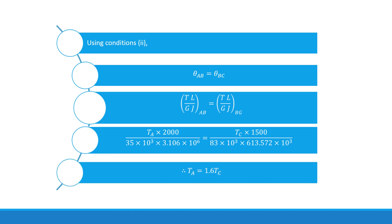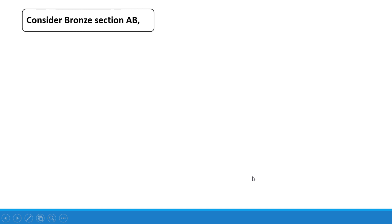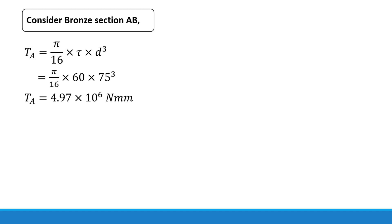Solving this gives the relation: Ta = 1.6 × Tc. Now considering the bronze section AB as a solid shaft, torque Ta = (π/16) × τ × d³, where allowable shear stress τ = 60 MPa and diameter d = 75 mm. This gives Ta = 4.97 × 10⁶ N·mm.